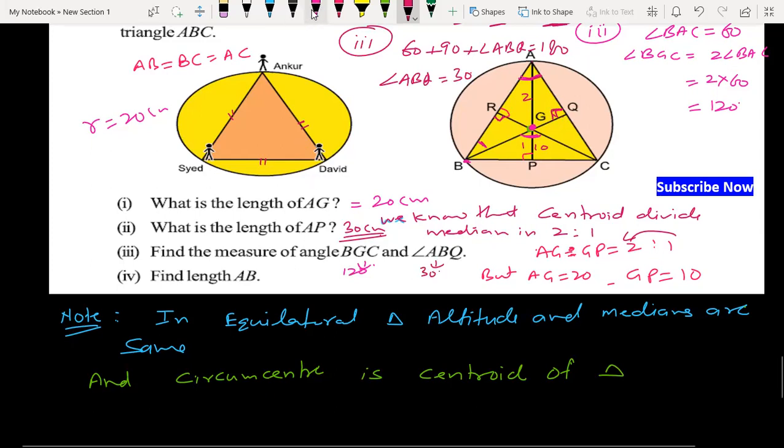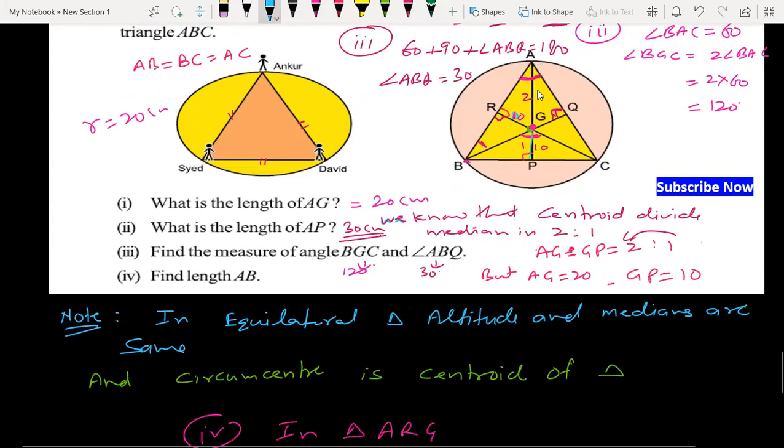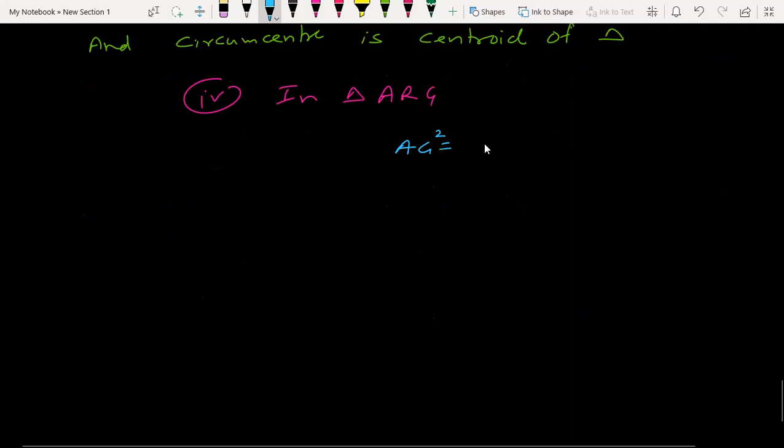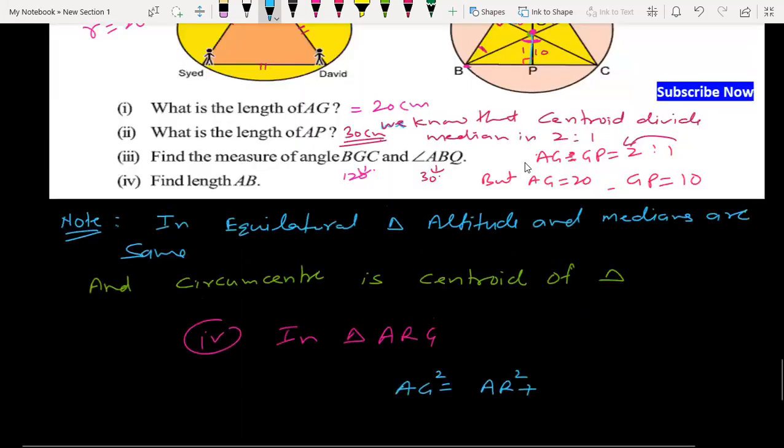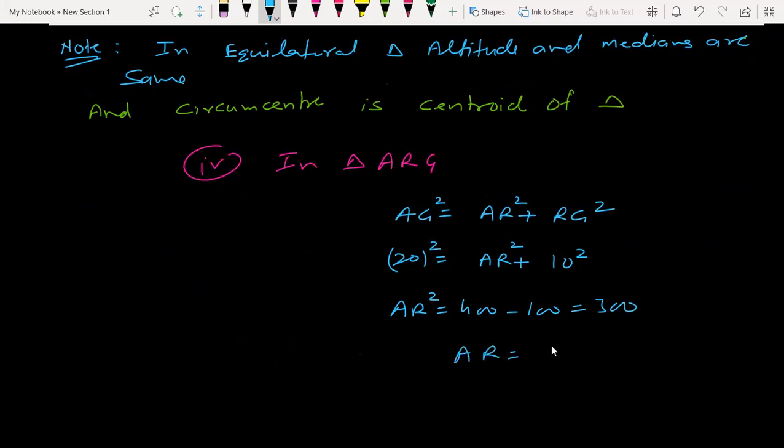To find length AB, GP is 10 and radius is 20. Triangle ARG is a right triangle. AG square equals AR square plus RG square. AG is 20, RG is 10. So 400 minus 100 equals 300, therefore AR value is under root 300, which is 10 root 3.